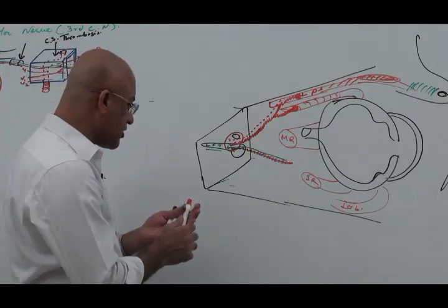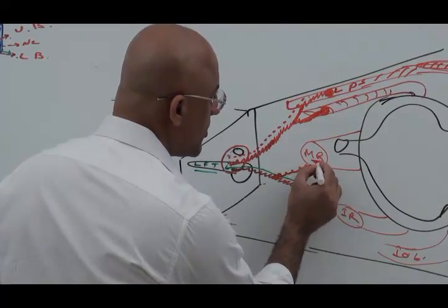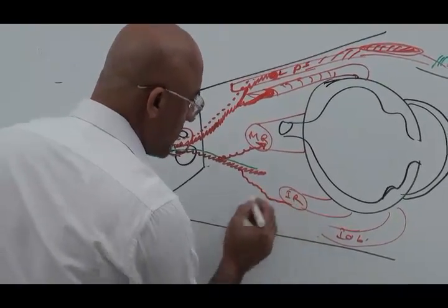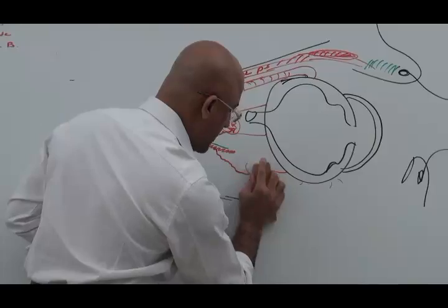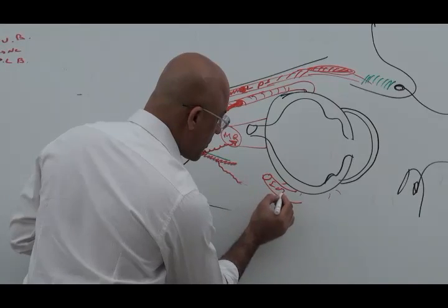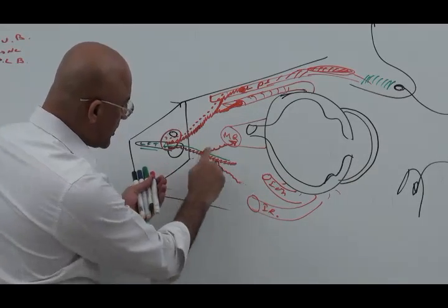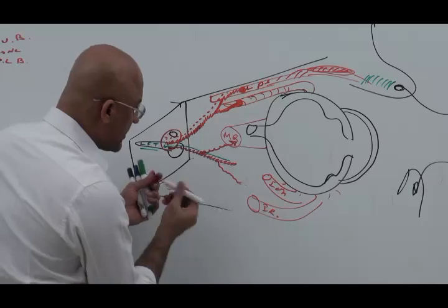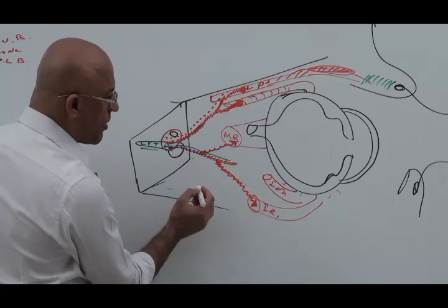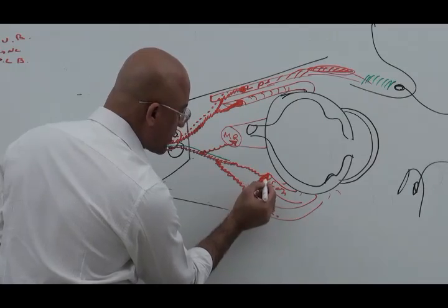Now we come to the lower division. Out of this lower division, somatomotor fibers - number one they go to medial rectus. Number two fibers go to inferior rectus. And what is left now? Inferior oblique. These fibers go to inferior oblique.